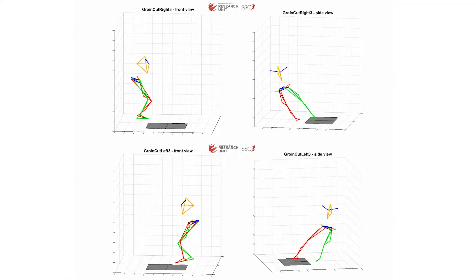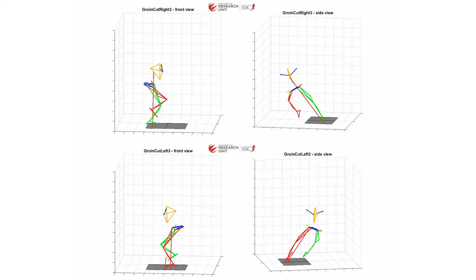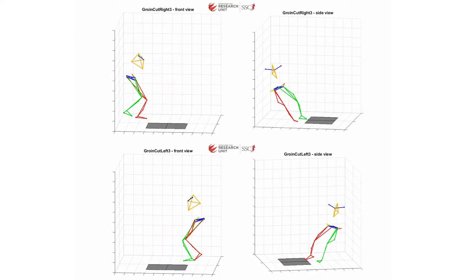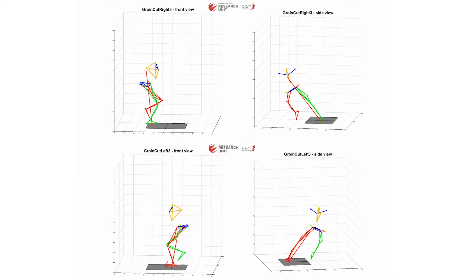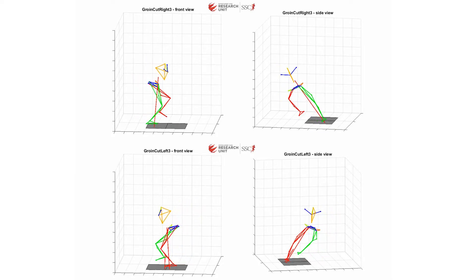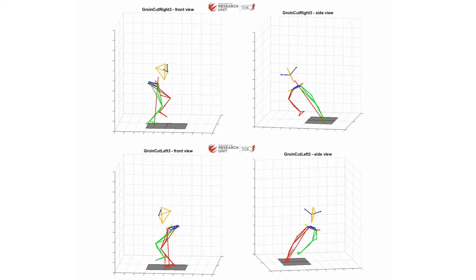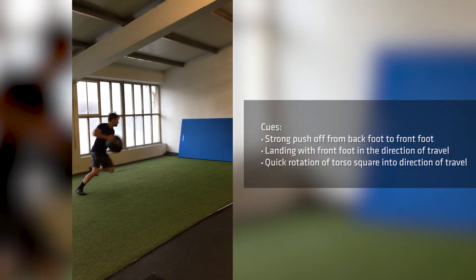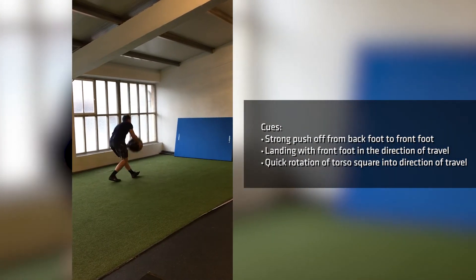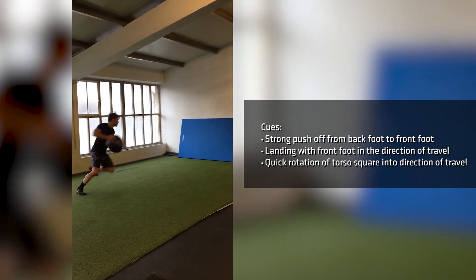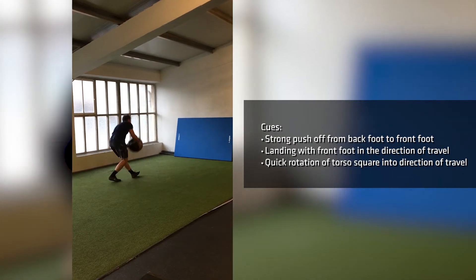Having addressed this as a skill issue, the skill limitation does also manifest itself as a capacity issue, as the 3D model of the cut shows lower hip extension and force application in the right leg, particularly in the front view of the groin cut, albeit a subtle difference. A drill used to address force transfer from the back foot onto the front foot in a cut — applicable to change of direction tasks and addressing foot position upon landing and torso rotation — is the counter movement rotation or med ball throw, as shown in the video.